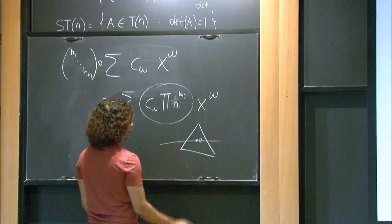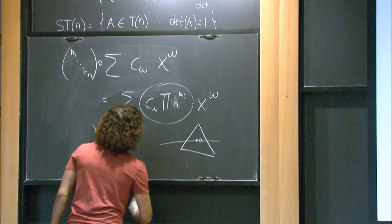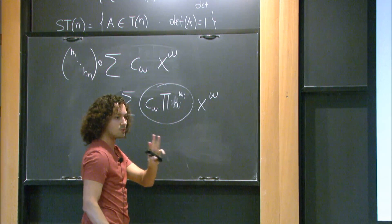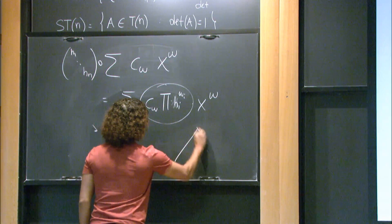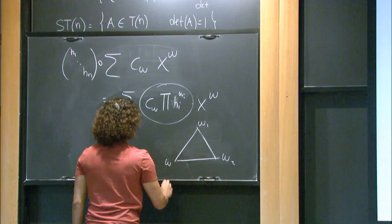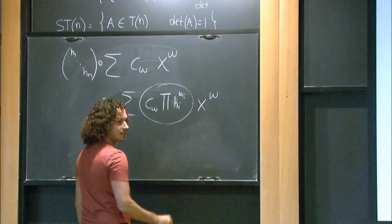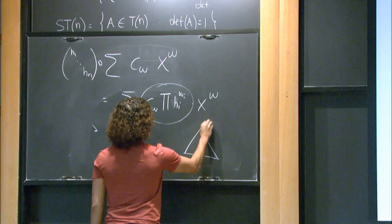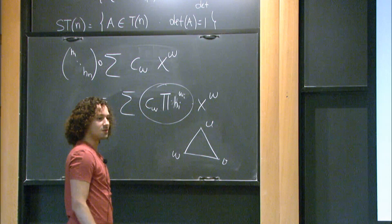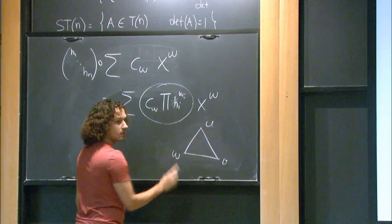If I have a polynomial with exponents u, v, w, and zero is outside their convex hull, I can find a separating hyperplane. This means I can find a one-parameter action — t to the a_1 through t to the a_n — that encodes this hyperplane, such that all these guys go to zero. The statement is: there exist values of h_i that drive this to zero if and only if the zero vector does not lie in the convex hull of the exponents. This follows purely from the representation.